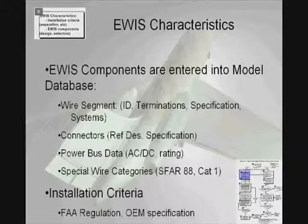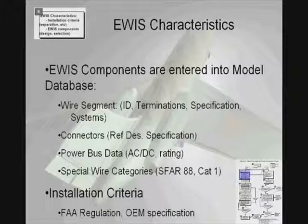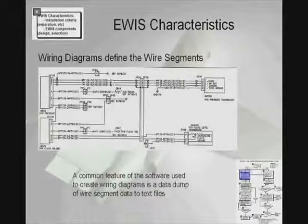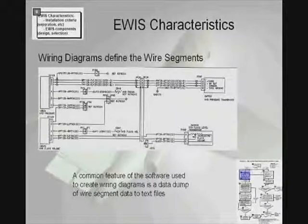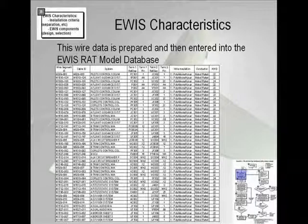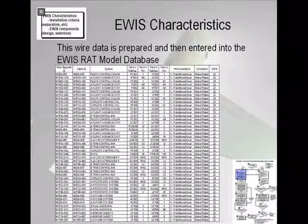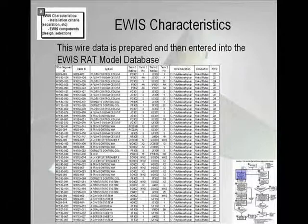Lastly, if the wire is part of a special category, such as if the wire is designated as an SFR88 wire, this is also captured. In addition, installation criteria defined by the FAA regulatory authorities or part of an OEM's design specification can be integrated into the EWIS RAT. The EWIS RAT can import wire information; modern circuit design drawing systems provide mechanisms to dump wire data to text files, which can be imported directly. All of the wire information, including termination points, wire insulation, conductor, and wire gauge, can be imported into the EWIS RAT.